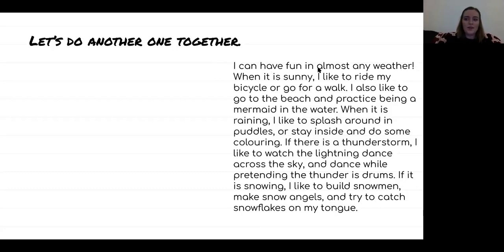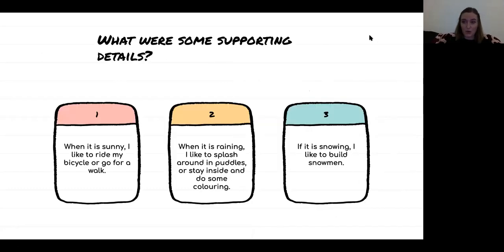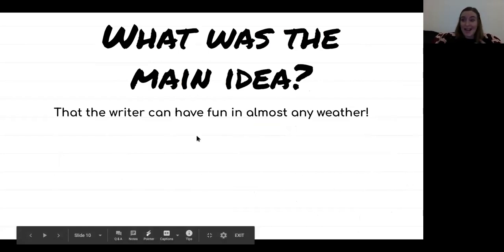What I think the main idea is here is actually just this first sentence — that the person who wrote this can have fun in almost any weather. The reason I think that's the main idea is because that's what it's mostly about: it's telling me about all the fun things they can do in different types of weather, any type of weather. Each of the bits and pieces talking about different weather and what you can do to have fun would be the supporting details — they're helping to prove that point.